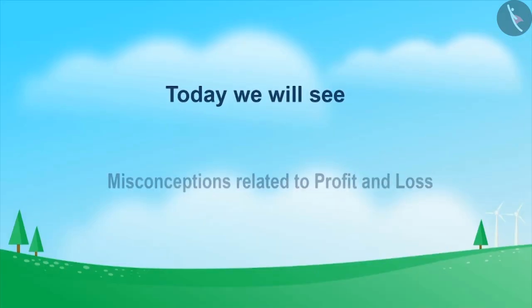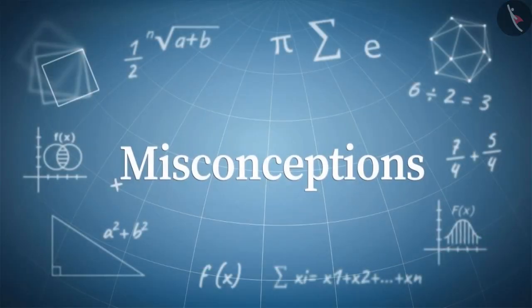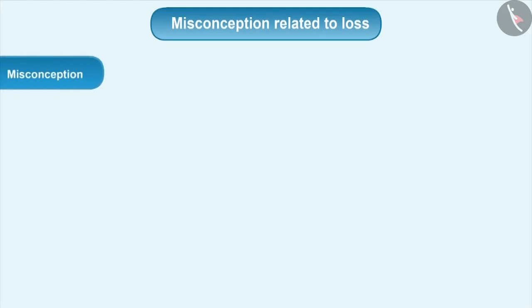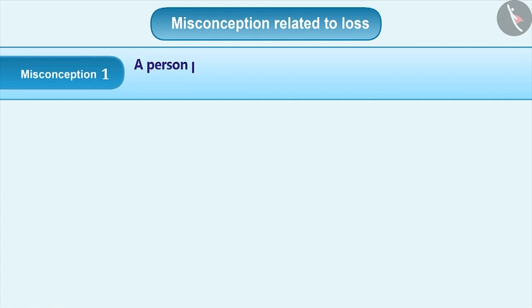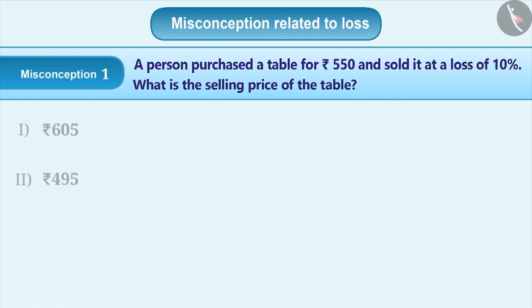Today we will see some misconceptions related to profit and loss. Misconception 1: A person purchased a table for Rs. 550 and sold it at a loss of 10%. What is the selling price of the table?